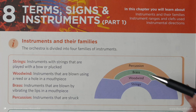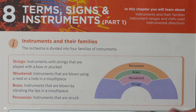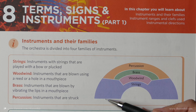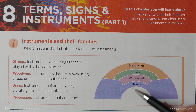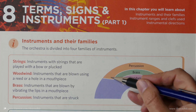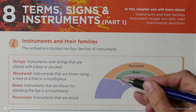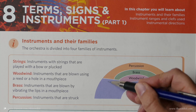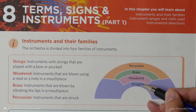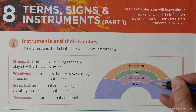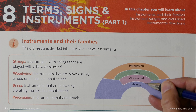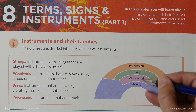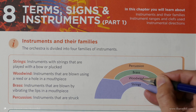And so here we have a diagram of the orchestra, and we can see we've got the strings such as the violin section which would be here, and the violas, and then you'd have the cellos and the double basses.